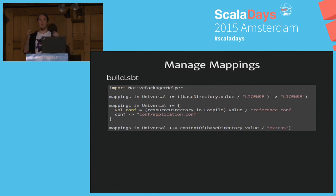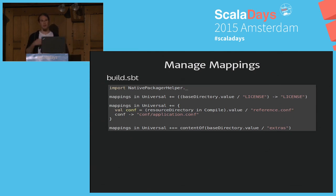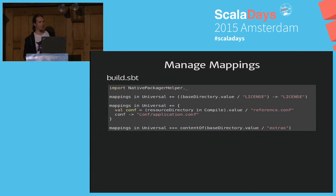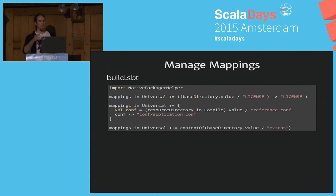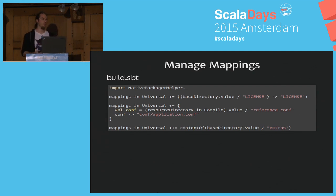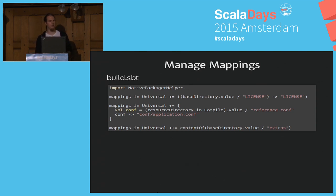With SBT 0.13.4 and the .value syntax, it's pretty simple. You take your base directory, map the license file, and say it should be at the root folder of the target system as 'license'. You can also rename files — take your reference.conf and in your output package call it application.conf. We also provide helpers for convenience, like 'content of this directory' or 'complete directory'. The other option is by convention: you can put files under src/universal if you want them in every package, or scope to Linux, Windows, or Mac OS X. Static readme or license files that don't change can go in that folder and SBT Native Packager will pick them up.